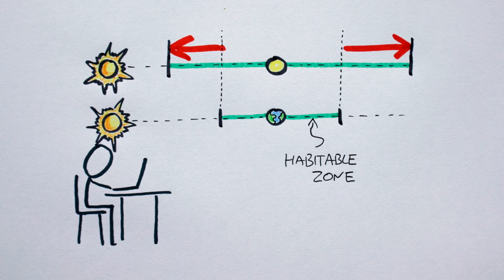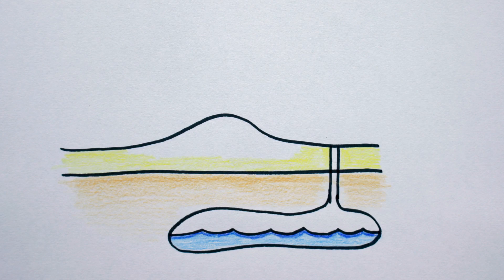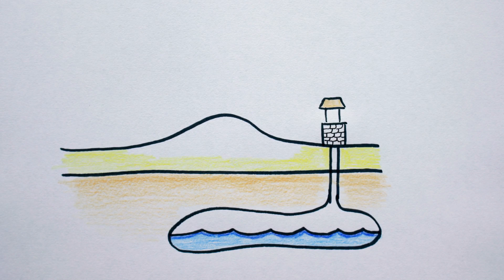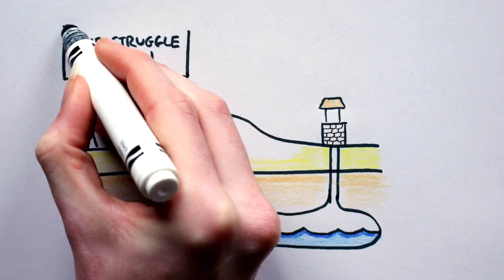But life needs water, right? Yes, but these models deal with the lack of surface water. Groundwater is not taken into account, so a desert planet may well have plenty of water, it would just be relatively hard to get at.